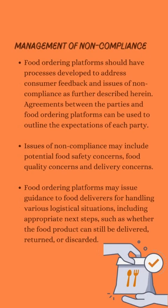Food ordering platforms should have processes developed to address consumer feedback and issues of non-compliance. Agreements between the parties and food ordering platforms can be used to outline the expectations of each party. Issues of non-compliance may include potential food safety concerns, food quality concerns, and delivery concerns. Food ordering platforms may issue guidance to food deliverers for handling various logistical situations, including appropriate next steps, such as whether the food product can still be delivered, returned, or discarded.